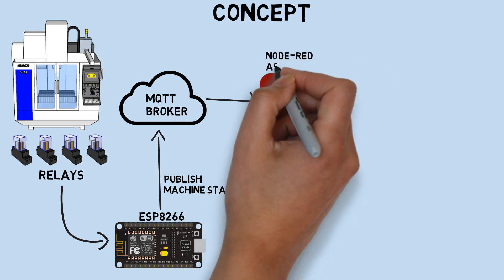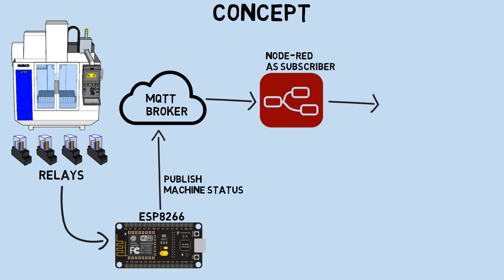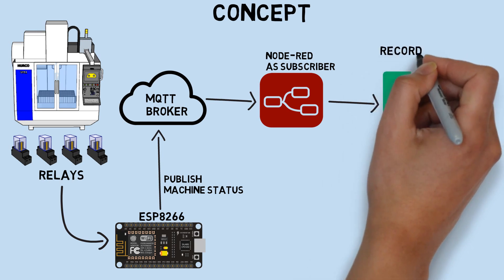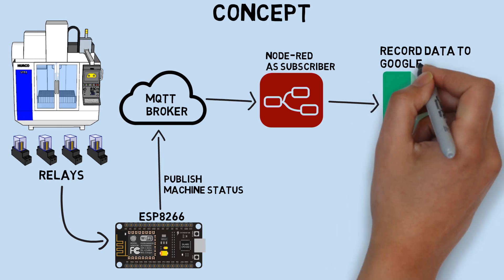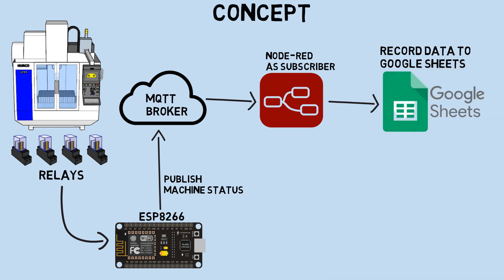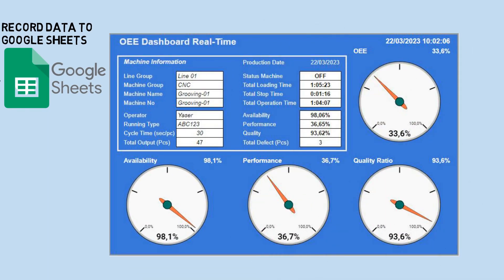As a subscriber, Node-RED will receive the MQTT message and record data to Google Sheets based on the type of received message. All data is recorded in Google Sheets as the database, separated into sheets based on type of data. I also created a simple OEE dashboard in Google Sheets so we can view the OEE status in real-time.